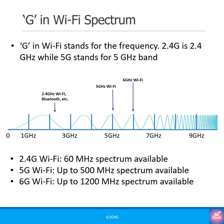In Wi-Fi terminology, G refers to Gigahertz or GHz in the radio frequency spectrum. 5G here means the 5 GHz spectrum band, and 6G refers to the 6 GHz band.